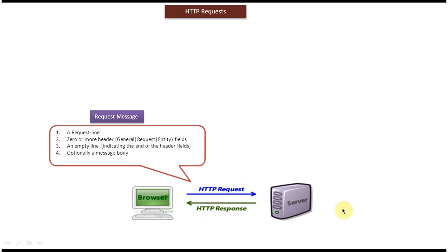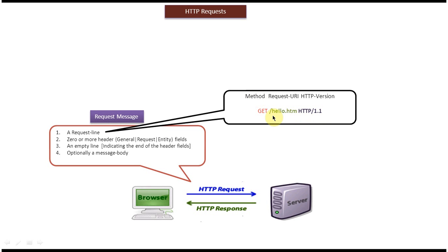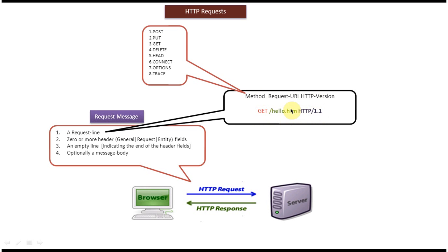Now we will see the details of the request line. The request line has three parts: the first one is the method, the second one is the request URI, and the third one is the HTTP version. A sample request line looks like: GET /hello.htm HTTP/1.1 — where GET is the method, hello.htm is the request URI, and HTTP/1.1 is the HTTP version.